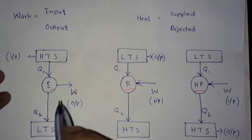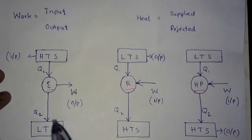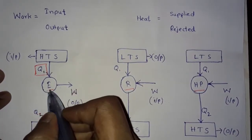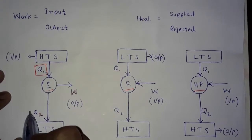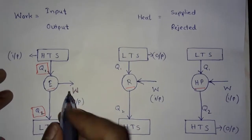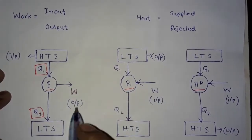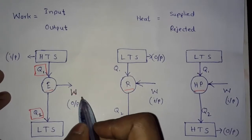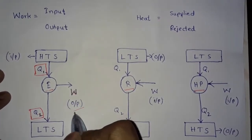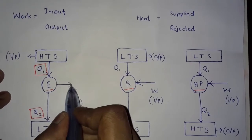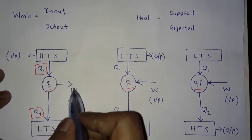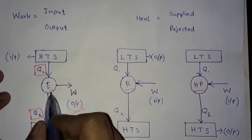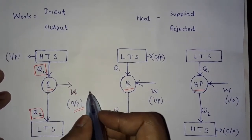In a heat engine, we supply heat energy to the system — in this case the heat engine — and we reject some amount of heat to the atmosphere. The output of this process is work done from the system, which is the engine's output. This arrow shows work done from the system.